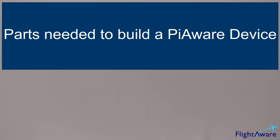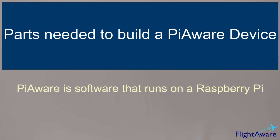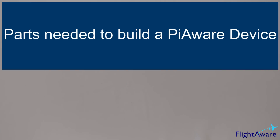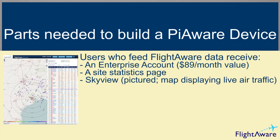Hi everyone! This video shows the parts needed to build a PiAware, which is the software that runs on a computer receiving signals from aircraft. Signals are radio waves aircraft emit to tell any device listening where it is located every second. If you set up a device to listen to the messages and send the information to FlightAware, you can receive an Enterprise account, a page showing the site's statistics, and SkyView, which is a webpage displaying live air traffic on a map.